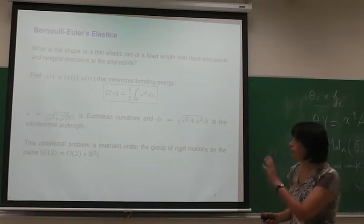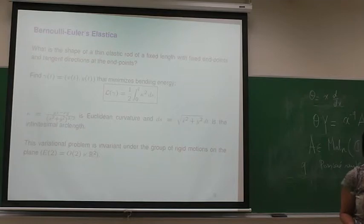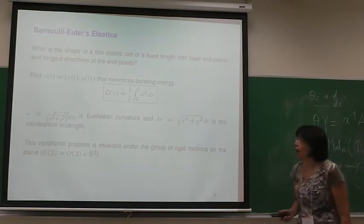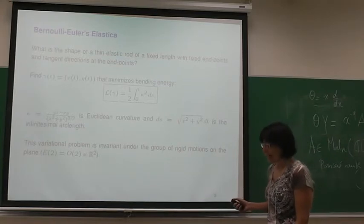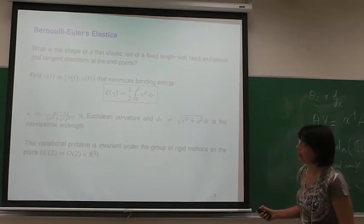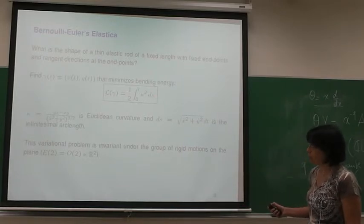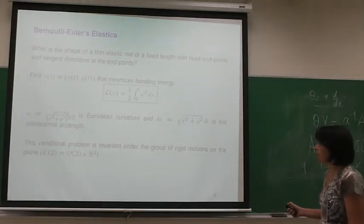I will not talk about stability, but I will talk about variational representation of this problem. The variational representation is due to Bernoulli, and later was used to really compute a lot of solutions — that's why it's often called Euler's Elastica, though he used a lot of results of Bernoulli. We formulate it as a variational problem. The shape which this curve would take would minimize bending energy. Bending energy involves Euclidean curvature kappa, written explicitly in terms of x and y, with ds being Euclidean arc length.